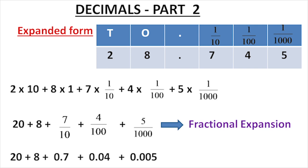So we have 20 plus 8 plus 0.7 plus 0.04 plus 0.005. This expansion formula is the decimal expansion.